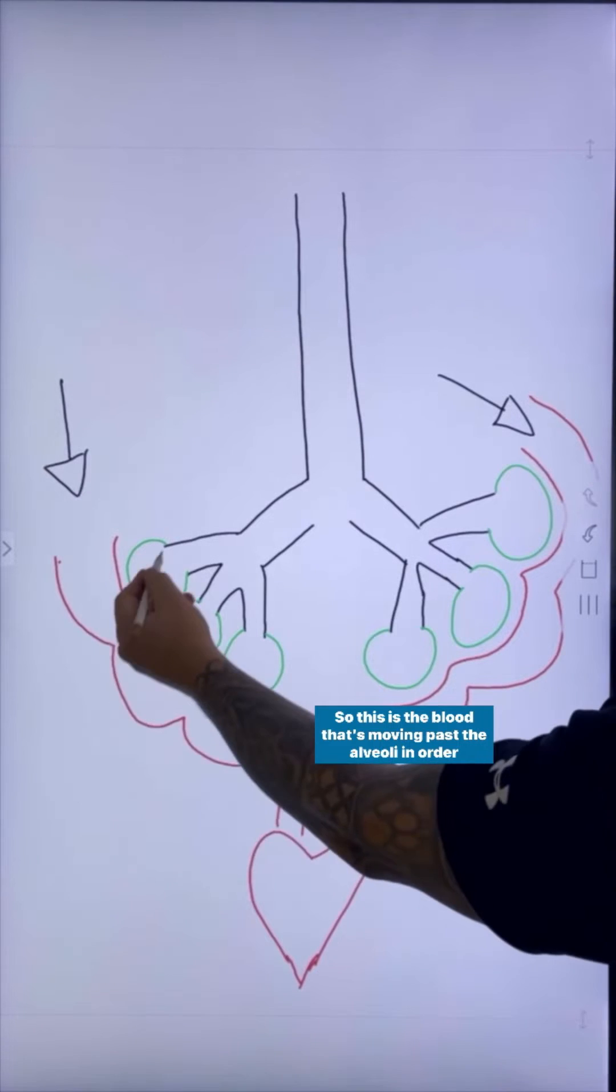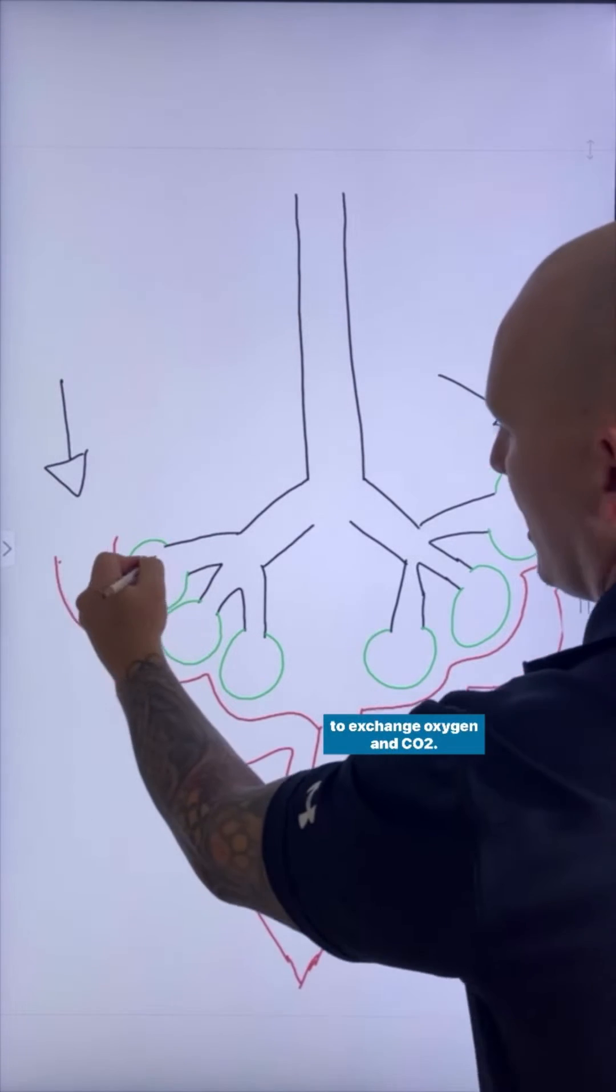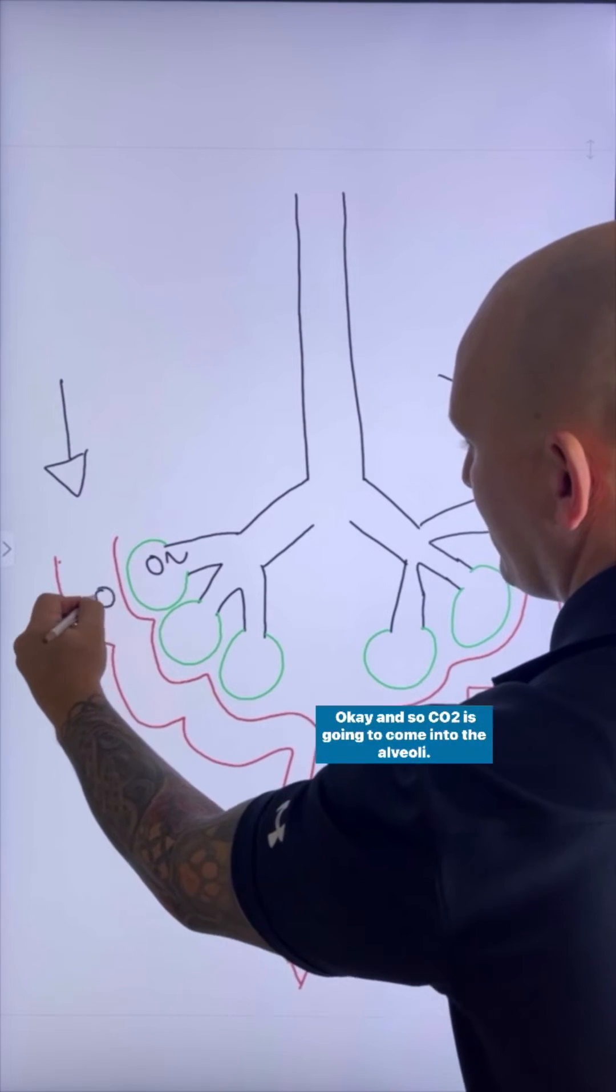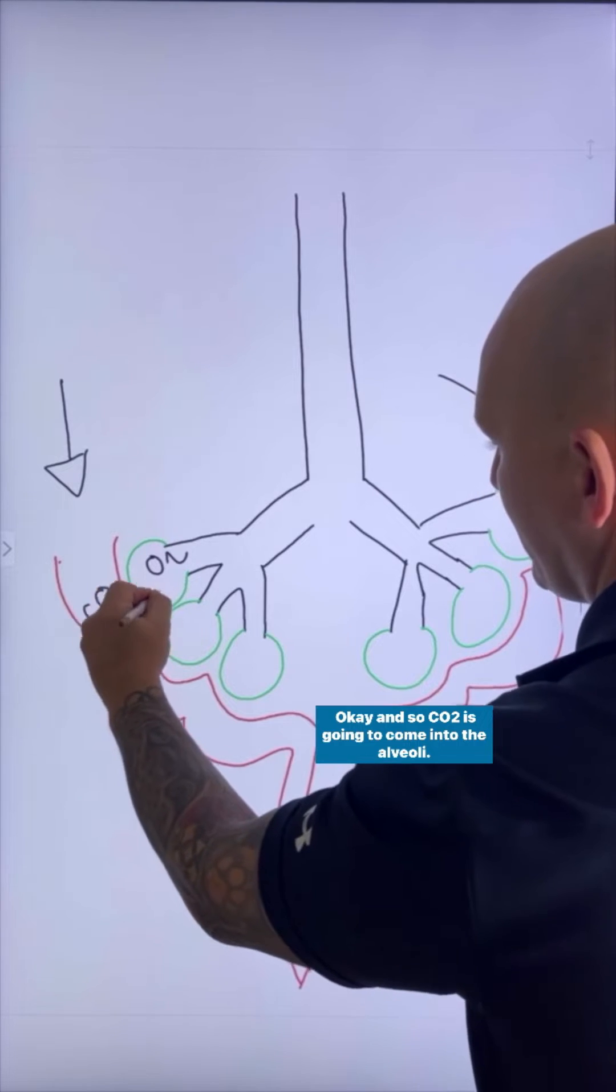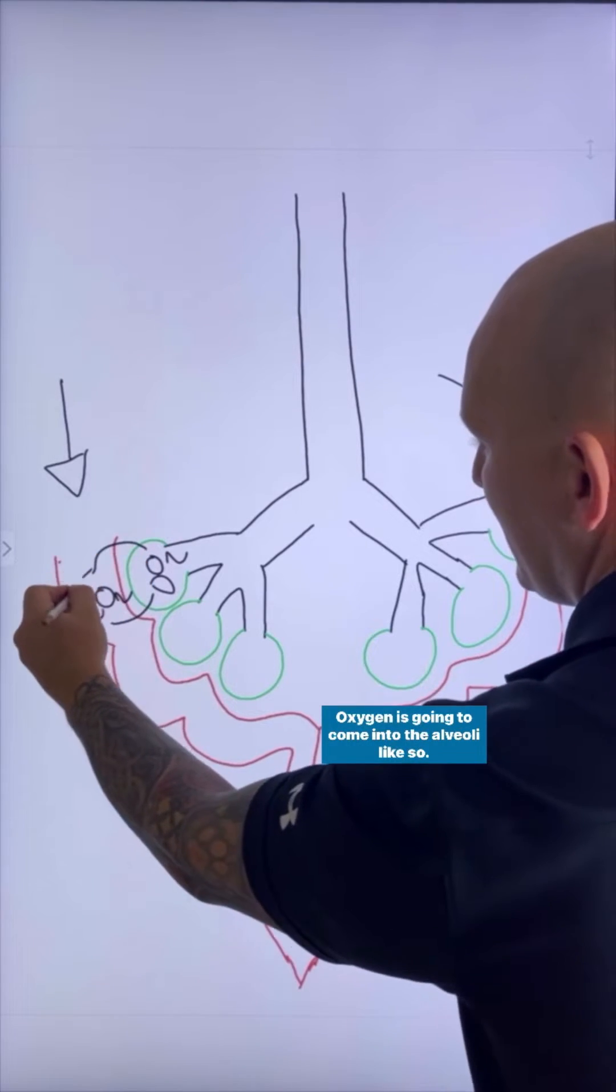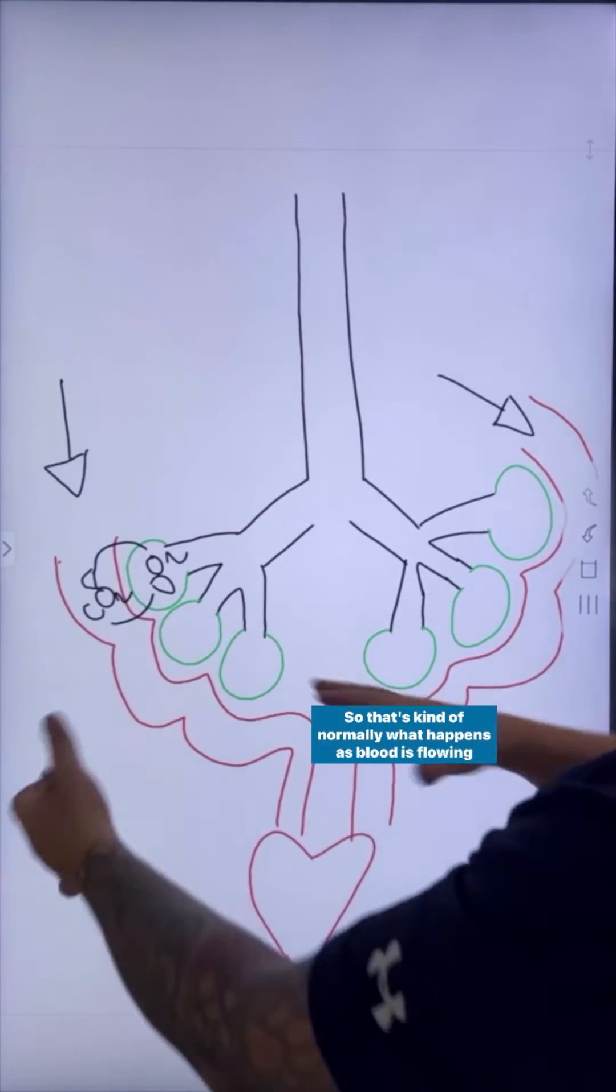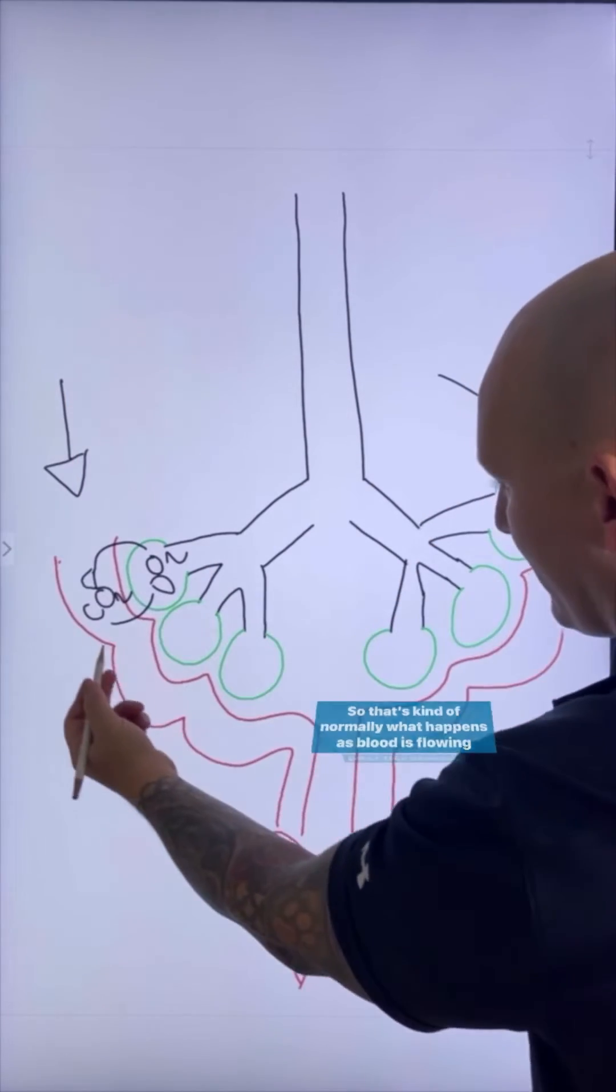So this is the blood that's moving past the alveoli in order to exchange oxygen and CO2. And so CO2 is going to come into the alveoli, oxygen is going to come into the alveoli like so. So that's kind of normally what happens as blood is flowing past the alveoli.